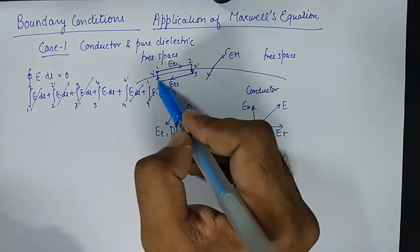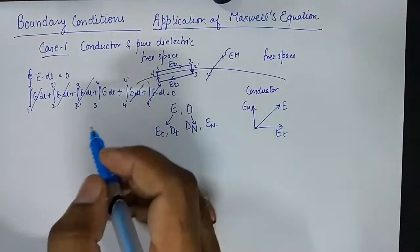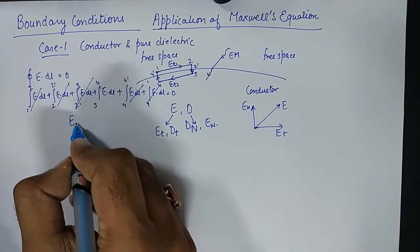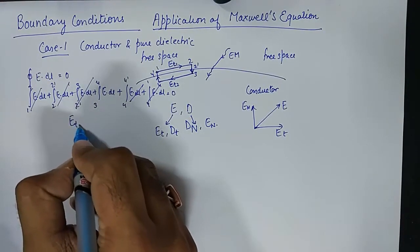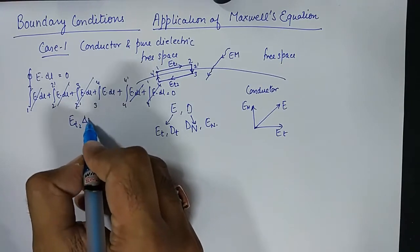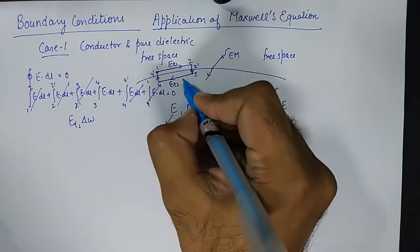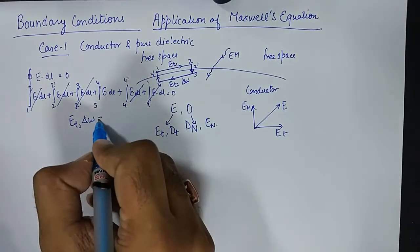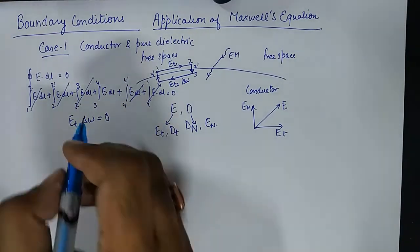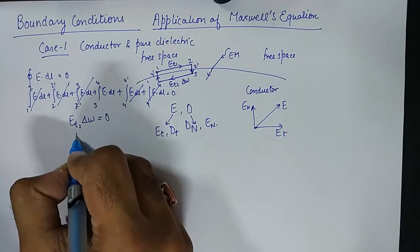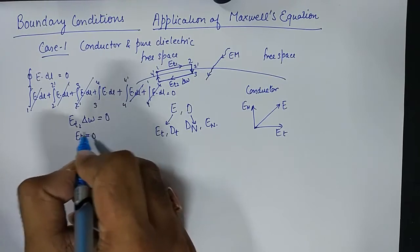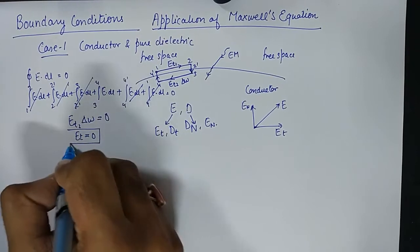One component is downward, one is downward, one is upward. So we are left with ET times delta-W. As the width delta-W approaches 0, ET is equal to 0.